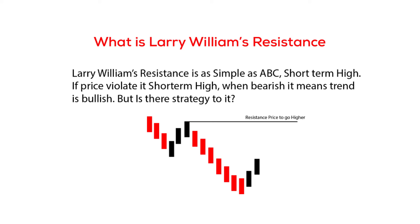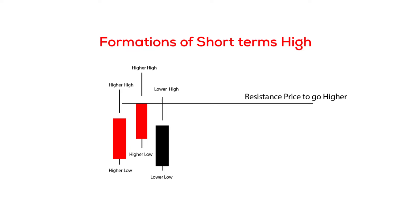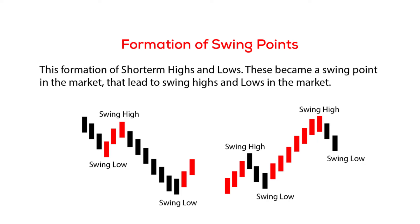Larry Lane's resistance is a short-term high. For price to go higher when bearish, Larry Lane's resistance is as simple as ABC — it is a short-term high. If price violates its short-term high when bearish, it means the trend is bullish. When price creates a higher high on a bullish candle and price takes out the previous short-term high or low, this becomes a short-term high, also known as a swing point in the market.